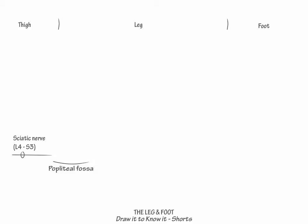Now draw the popliteal fossa, which is the depression behind the knee, and the fibular neck, which resides near the top of the lateral leg bone.